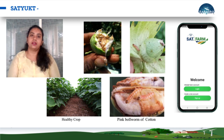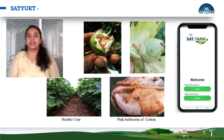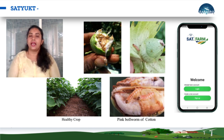Once the infection is severe, one can notice stains in the cotton lint and damaged seeds as well. The pest is active at temperatures of 20 to 25 degrees Celsius and a relative humidity of 50 to 70 percent.